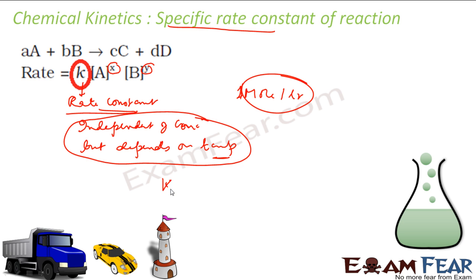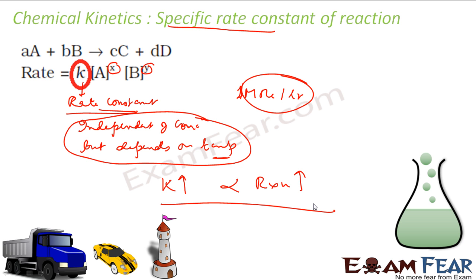A large value of K implies a faster reaction. So K is the rate constant, and the specific rate constant is the rate constant when the concentration of each reactant is 1 mole per liter. For a given reaction — for example, C + O₂ → CO₂ — the value of K will be fixed.